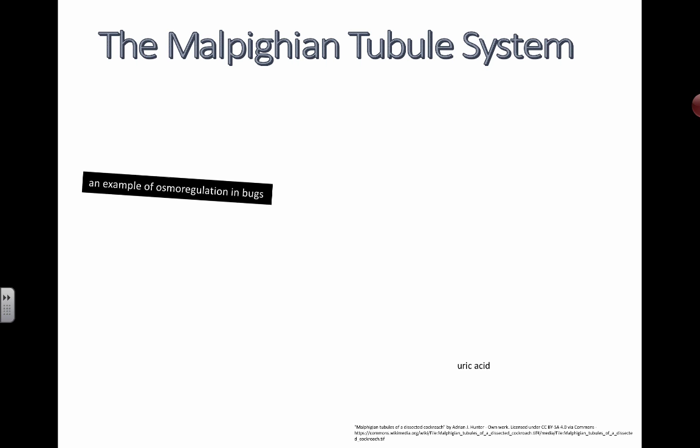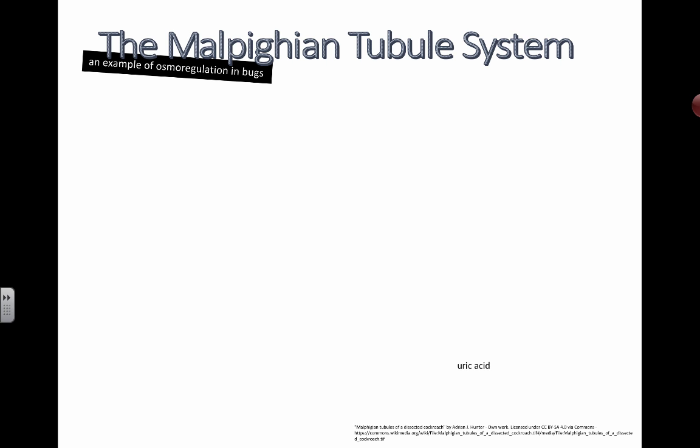Alright people, we're going to start by talking about something that is very specific. I studied this in college during my third year in an animal physiology course where we actually tried to dissect these little tubules called Malpighian tubules out of cockroaches. It was totally awesome and disgusting at the same time, but it's very specific and you have to learn it now in grade 12.